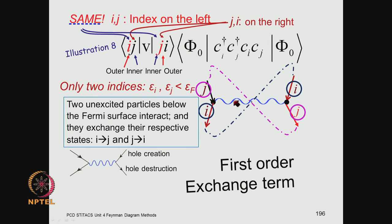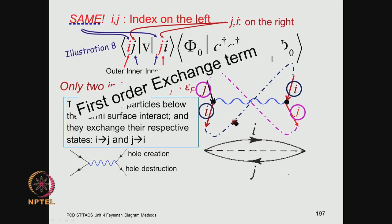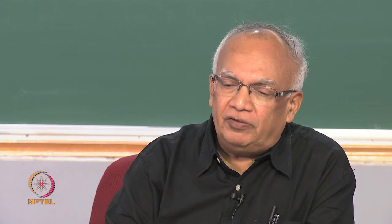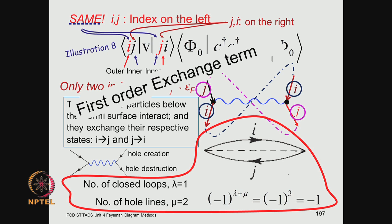If you look at the exchange term, you have a j i here, giving you the oyster — the first-order exchange correction to the free electron energy. This contributes a minus 1 sign, given by the phase minus 1 to the power lambda plus mu, with lambda equal to 1 (only one closed loop) and mu equal to 2. You can pick the number of loops and lines simply by looking at the picture — the topography — which is what is used in Wick's theorem.